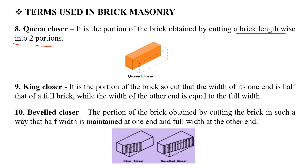The next one is the King Closer. The King Closer is the portion of a brick cut so that the width of one end is half that of the full brick, while the width of the other end is equal to the full width. It is obtained by cutting the brick so that half width is maintained at one end and full width at the other end.